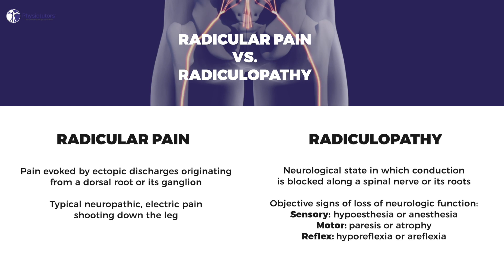Radiculopathy, on the other hand, is yet another distinct entity. It is a neurological state in which conduction is blocked along a spinal nerve or its roots. This leads to objective signs of loss of neurologic functions such as sensory loss called hypesthesia or anesthesia in the severe form, motor loss called paresis or atrophy in the severe form, or impaired reflexes called hyporeflexia or areflexia if they are completely absent.